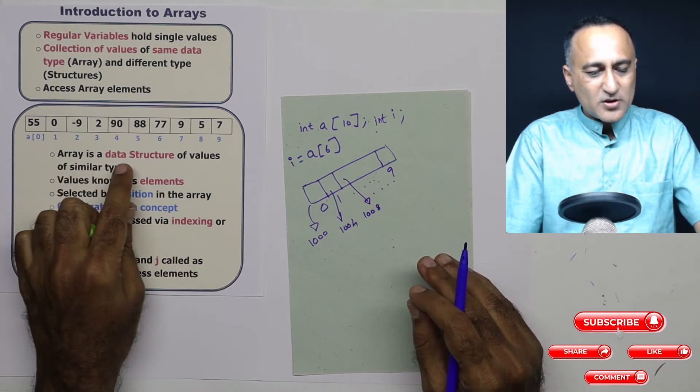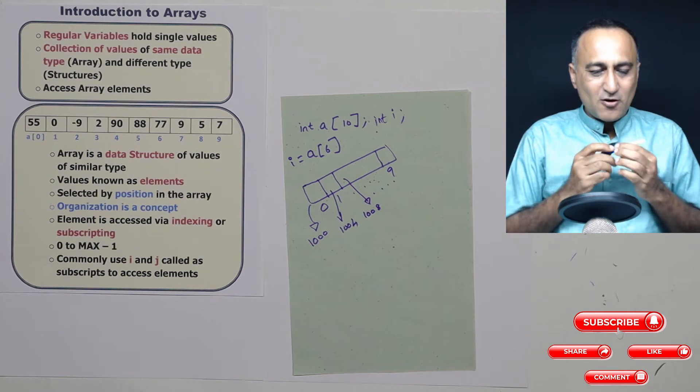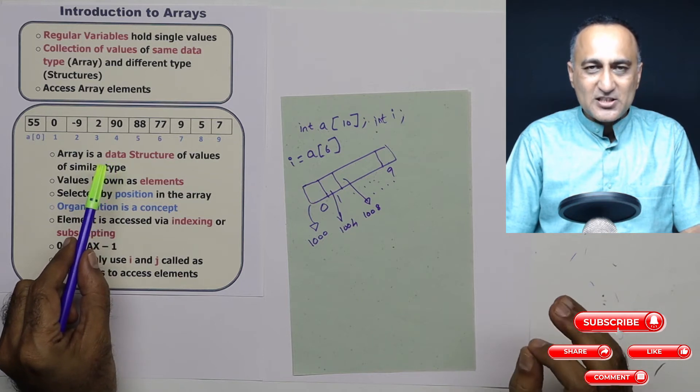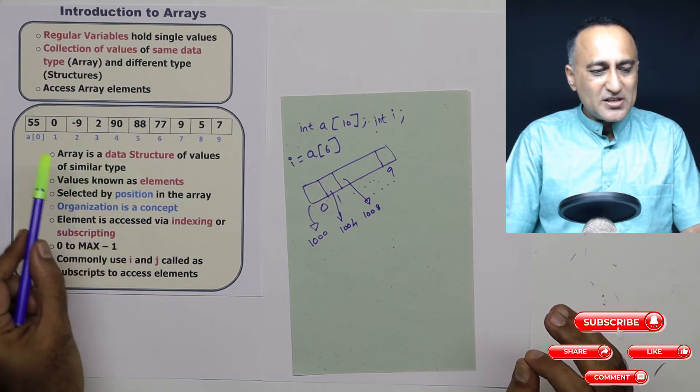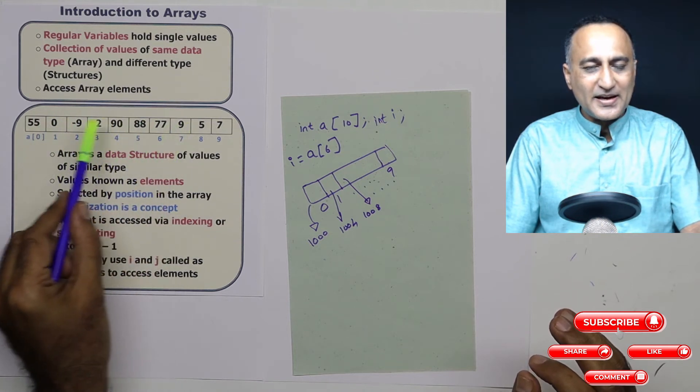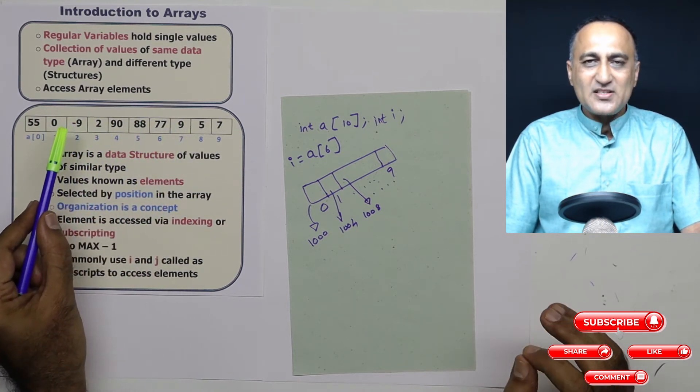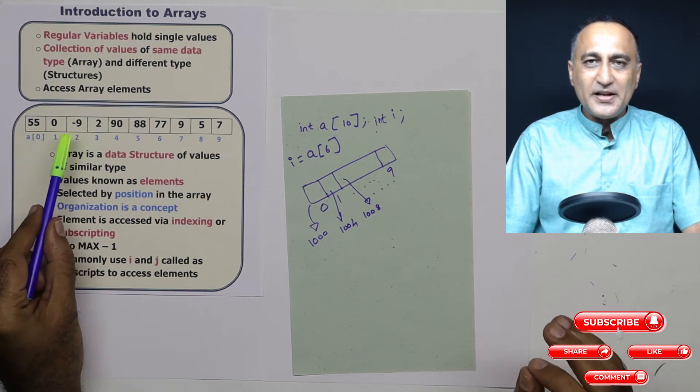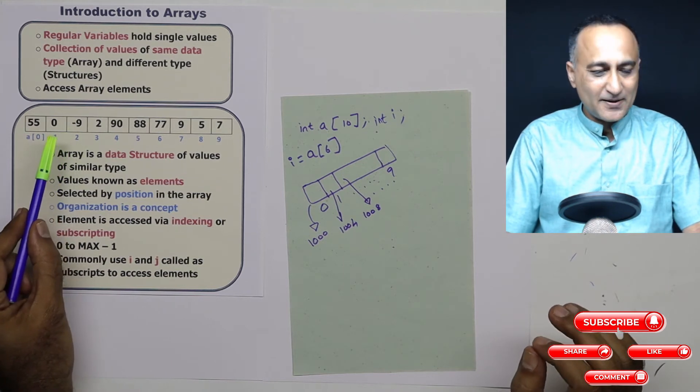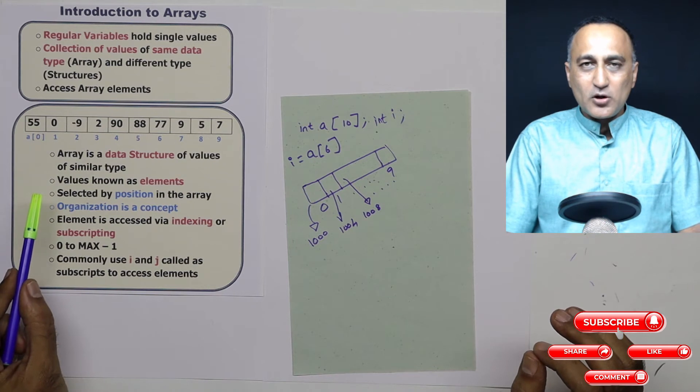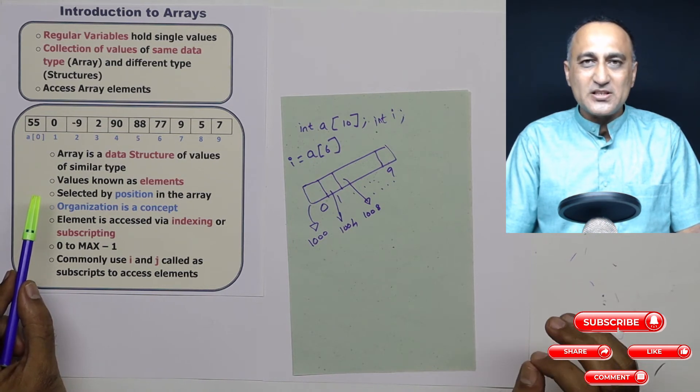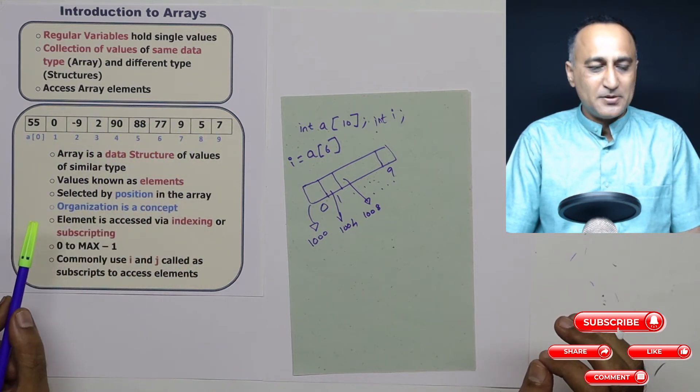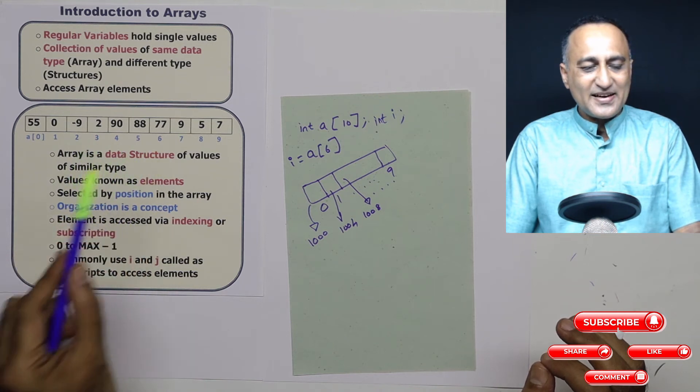Now, let's understand what is the meaning of this word. Array is a data structure of values of similar type. Data structure is a collection or organization of data in which there is a meaningful relationship between different data elements, and the way data is organized so that it helps us speedily retrieve the data, speedily modify the data, speedily delete the data. I told you about array being able to store names and university numbers. There is a meaningful relationship between different university numbers. That's why array is a data structure.